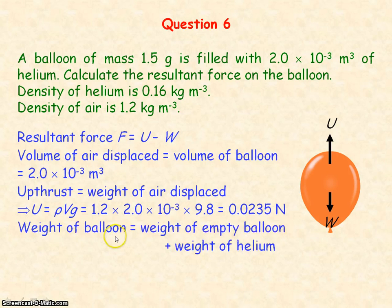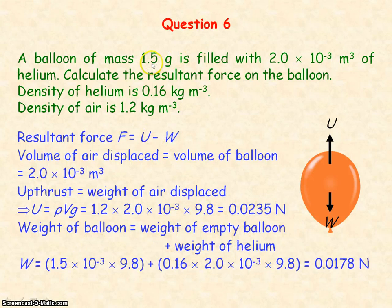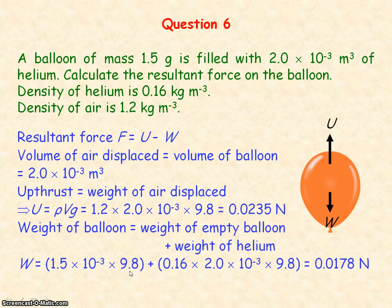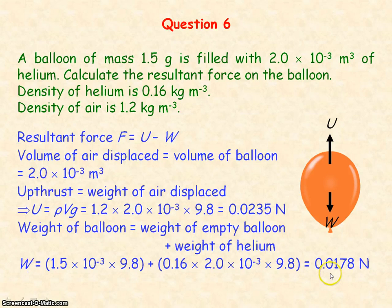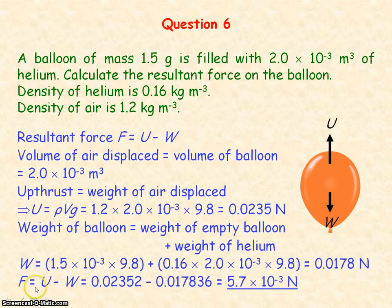To determine the weight of the balloon, we need the weight of the empty balloon plus the weight of the helium inside. The weight of the empty balloon is its mass — 1.5 grams, converted to kg by dividing by 1000 — multiplied by 9.8. The weight of the helium is the density of helium times the volume of helium multiplied by g (9.8). The total weight of the balloon is 0.0178 newtons. The resultant force, equal to upthrust minus the weight of the balloon, is 5.7 times 10 to the minus 3 newtons.